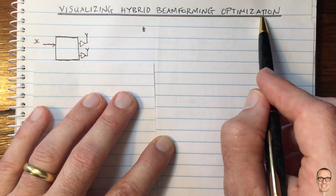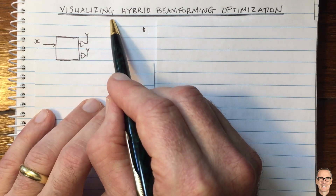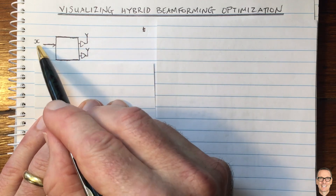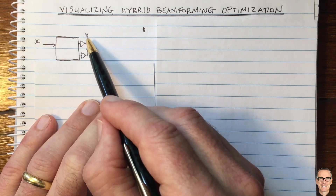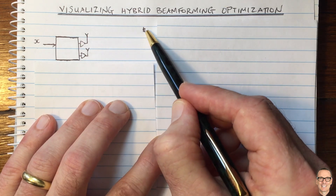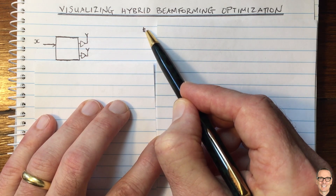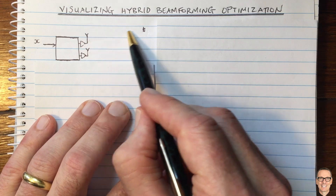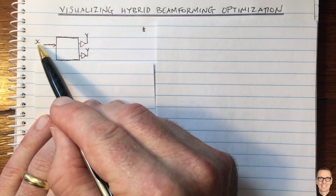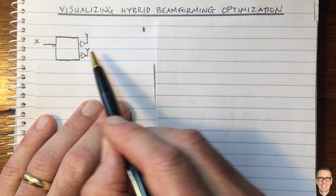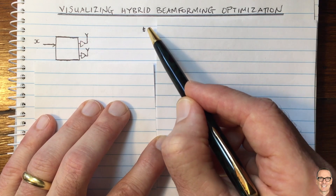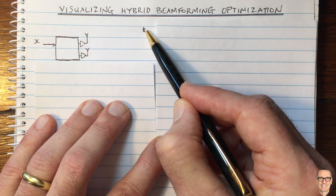Hybrid beamforming optimization can be tricky to visualize. Let's think about a standard beamforming scenario. We've got a constellation point X, two antennas, each one has an amplifier, and there's an intended user at a certain angle. The path length is different from the two antennas, so if we just sent that constellation point directly off each antenna, it would be received with a phase difference along those two paths when it gets to that receiver.